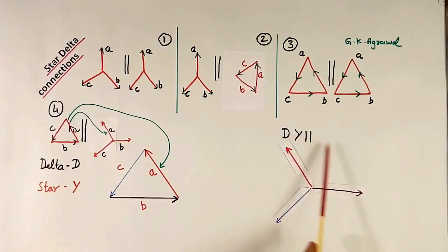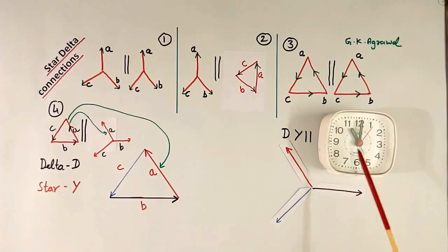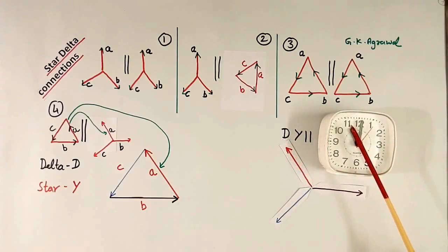Now you see this is called DY 11. Here you see our needle is at 11. This phase A is in the direction of 11.